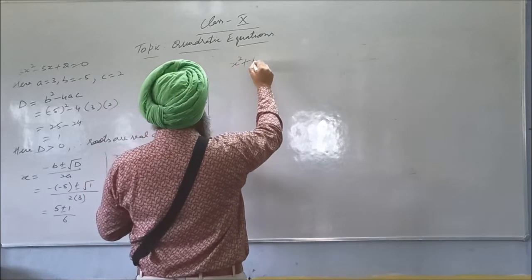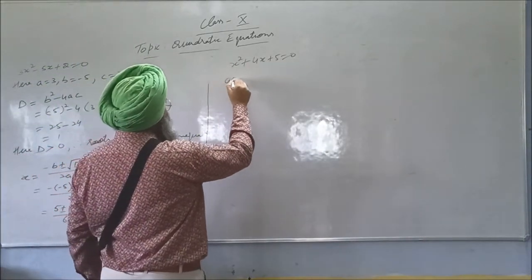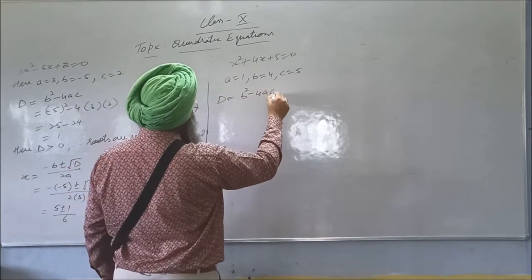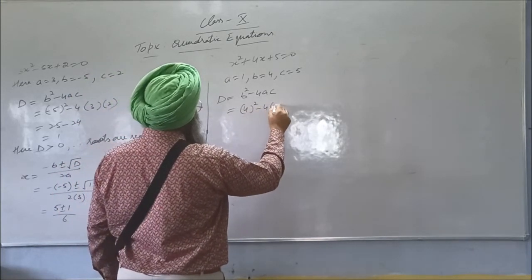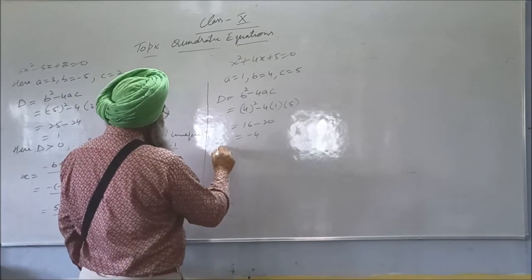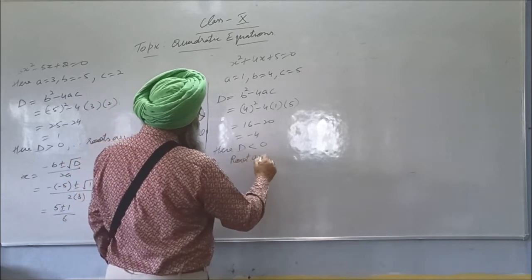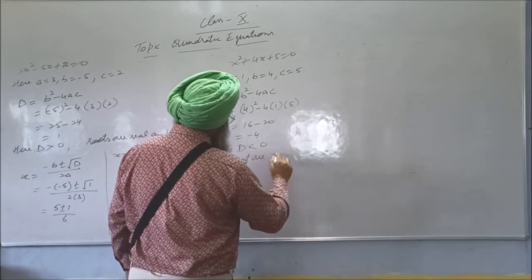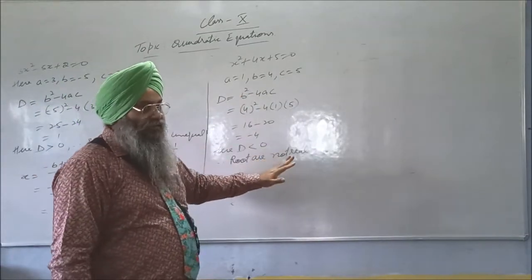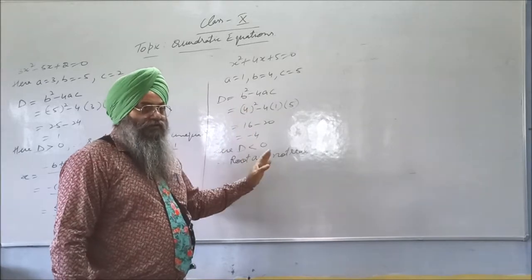Second example: x squared plus 4x plus 5 equals 0. Here a is 1, b is 4, c is 5. First we calculate the discriminant: D equals 4 squared minus 4 into 1 into 5 equals 16 minus 20 equals minus 4. Here D is less than 0, therefore roots are not real. Or you can write: roots will not exist. Because of the negative discriminant we cannot find the roots.